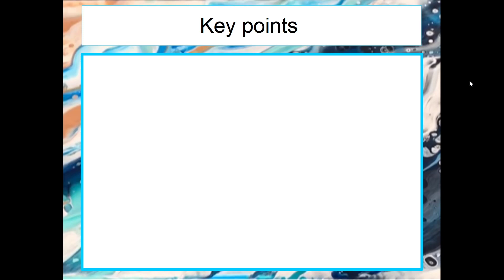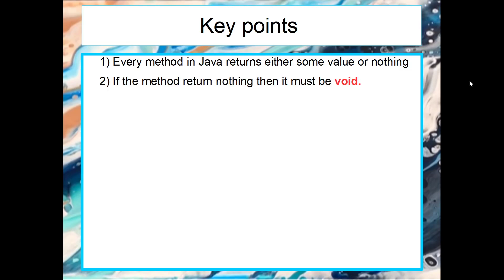When you create a method signature you have to tell it what will be returned. Every method in Java returns either some value or nothing. Even though this sounds silly, it's very important because if you have it returning nothing, you must tell the method signature that nothing will be returned by using the void keyword.